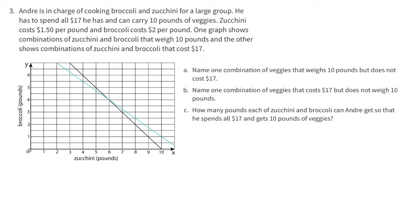Number 3: Andre is in charge of cooking broccoli and zucchini for a large group. He has to spend all $17 he has and carry 10 pounds of veggies. Zucchini costs $1.50 per pound and broccoli costs $2 per pound. One graph shows combinations of zucchini and broccoli that weigh 10 pounds, and the other shows combinations that cost $17. The black line graph shows the 10-pound combination, and the bluish line graph shows the $17 combination.